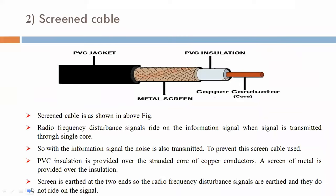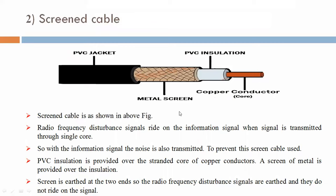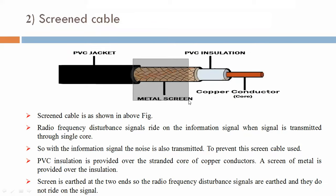Now we are discussing screen cable. A screen cable is shown in the above figure. The first portion is called the copper conductor or core. The second portion is PVC insulation. The third portion is a metal screen, and the last layer is the PVC jacket.